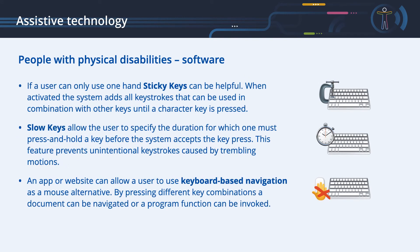If a user can only use one hand, sticky keys can be helpful. Imagine having to type a combined key combination like Shift-Ctrl-Option-U with one hand — this would be really difficult. When activated, the system allows all keystrokes that can be used in combination with other keys to be entered in sequence instead of at the same time. Slow keys allow the user to specify the duration for which one must press and hold a key before the system accepts the key press, preventing unintentional keystrokes caused by trembling motions. An app or website can also allow keyboard-based navigation as a mouse alternative, where pressing different key combinations navigates a document or invokes a program function.